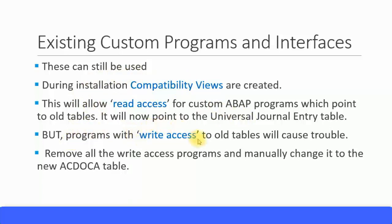But programs with write access — meaning changing the table, or creating some kind of information in the table — if they point to old tables, then they will not work. Because the compatibility view, just like the word 'view', only allows you to view the table. You cannot make changes via old tables. So if you have any program that writes new information to old tables, it will not work. You need to manually change those programs to point to the new universal journal entry table, which is the ACDOCA table.